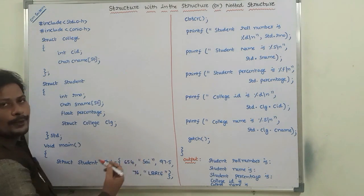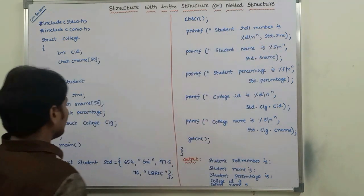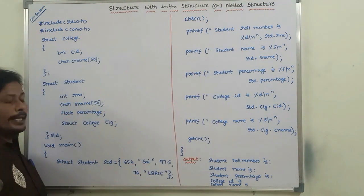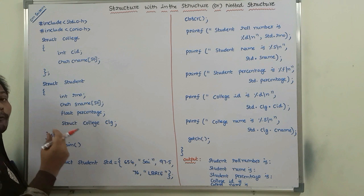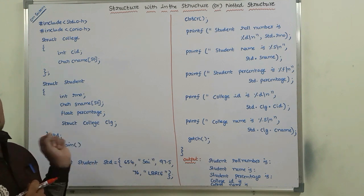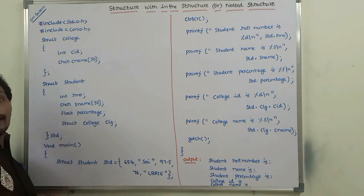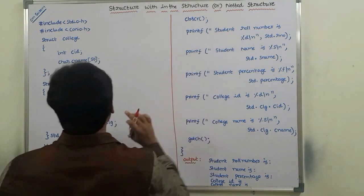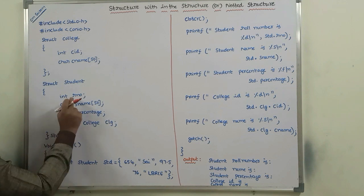Now we are printing these values. First one is student roll number — printf student roll number, data type is int so we write %d. To access the structure members of student, we use the dot operator: structure variable dot member name. So std.rollnumber to access the student roll number.